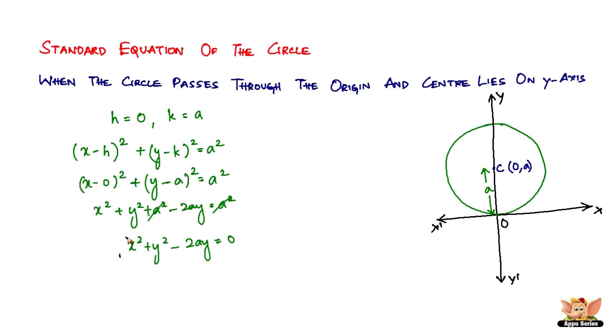Therefore, x square plus y square minus 2ay equals 0 is the standard equation of the circle when the circle passes through the origin and the center lies on the y-axis.